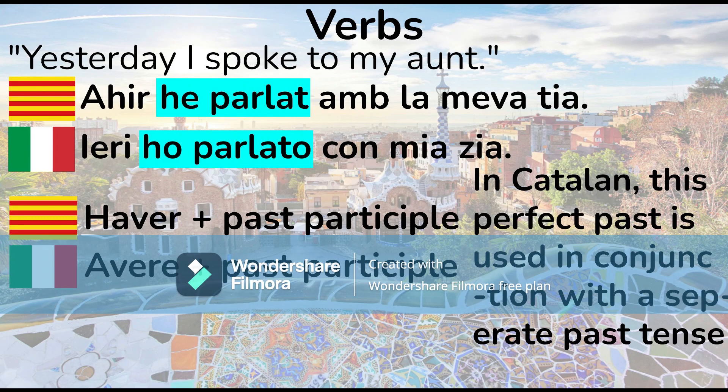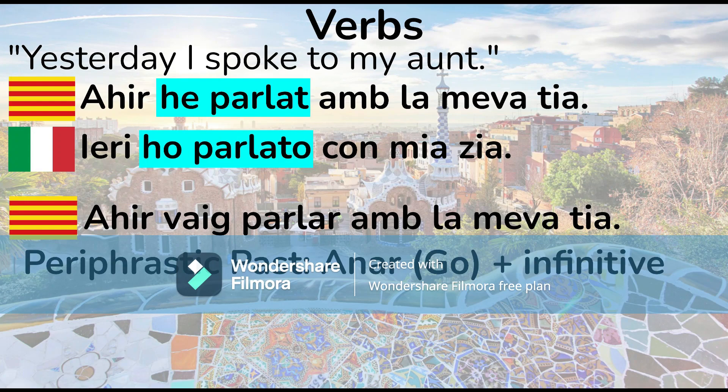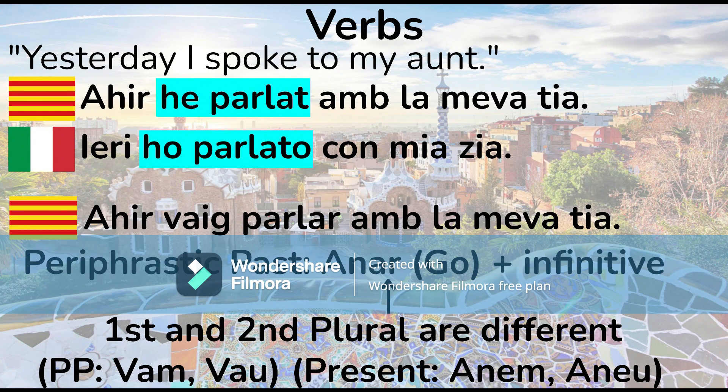The paraphrastic past in Catalan is used with the verb 'anar' plus the infinitive of the main verb. Note that the first and second person plural forms are different in the present and paraphrastic forms — it's 'vam,' 'vau' in the paraphrastic past, but 'anem,' 'aneu' in the present tense.